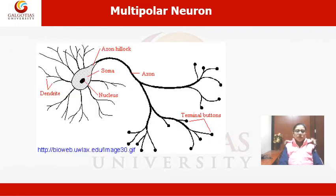Here you can see the multipolar neuron diagram. As the name suggests, you can differentiate it from previous neuron types like bipolar on the basis of their structure — multipolar has many poles, as you can see here. The other parts remain the same: upward projections are dendrites, then coming down there is the axon hillock, the axon, myelination, and then the terminal buttons.